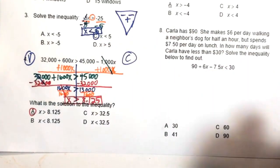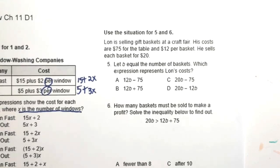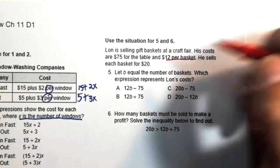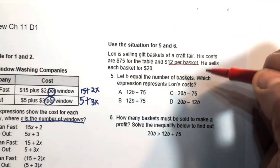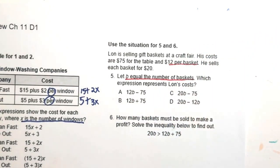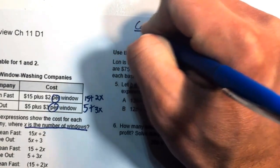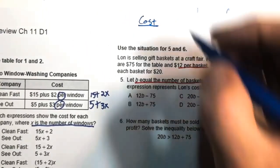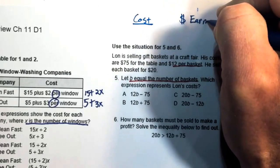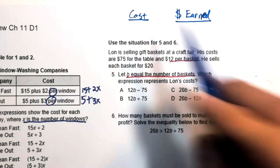Moving on to number five: Lon is selling gift baskets at a craft fair. His costs are $75 for the table and $12 per basket. He sells each basket for $20. Let b equal the number of baskets. To earn a profit, your cost must be smaller than the dollars earned — you need to earn more than you're spending.